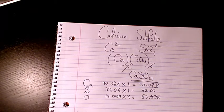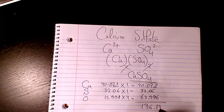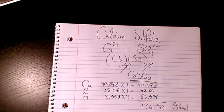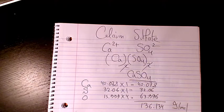Plus 40.078 plus 32.06, that makes it 136.134 grams per mole. So that's the molar mass of calcium sulfate.